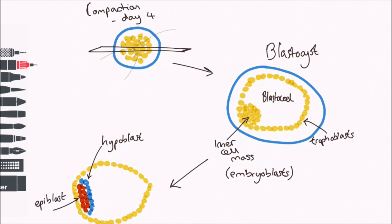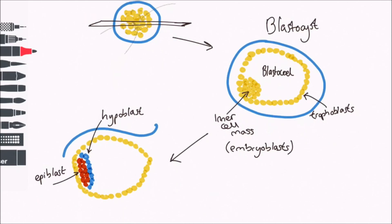At the end of the fifth day, the blastocyst hatches from inside the zona pellucida. This coincides roughly with the blastocyst reaching the uterine cavity.